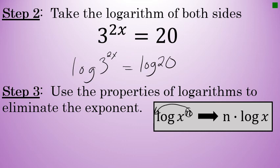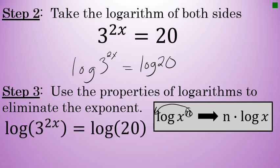You can move the n to the front of the logarithm and rewrite that as n times the log of x. In this problem, we are taking the log of 3 to the 2x power. So we can take the 2x and move it to the front of the logarithm, rewriting that as 2x times the log of 3 equals the log of 20.